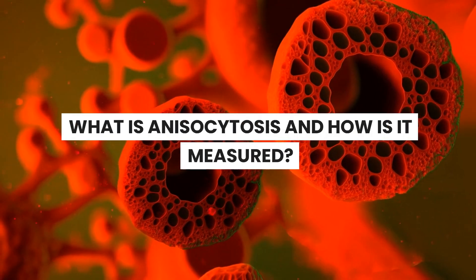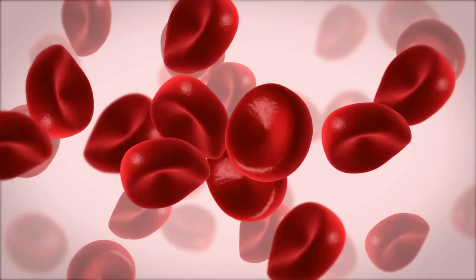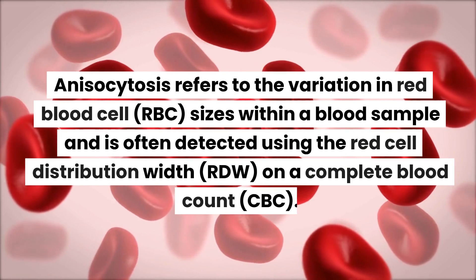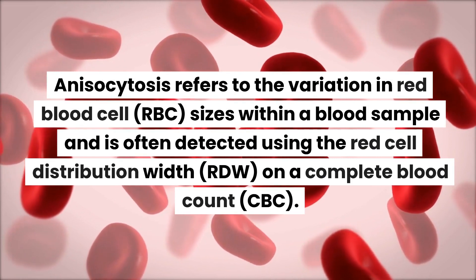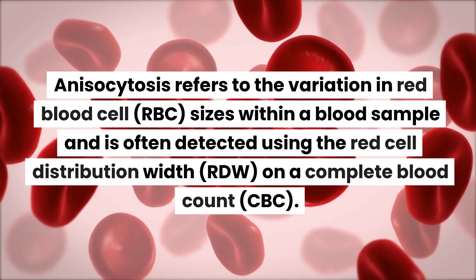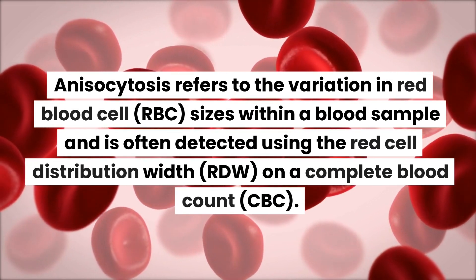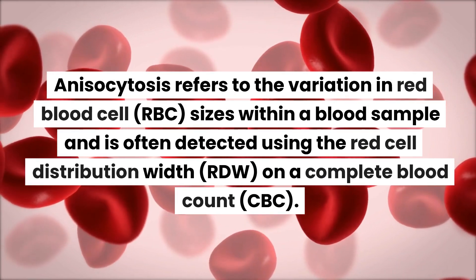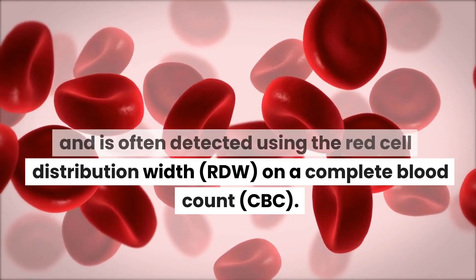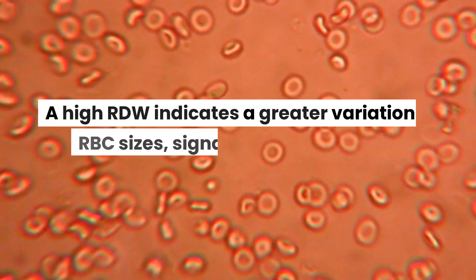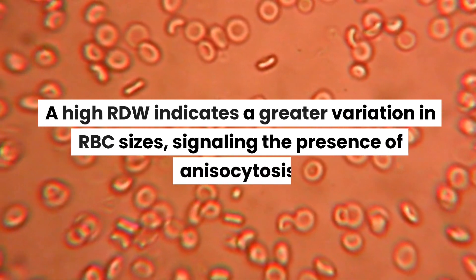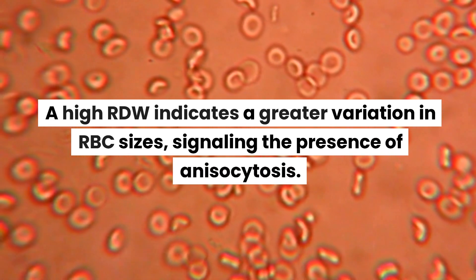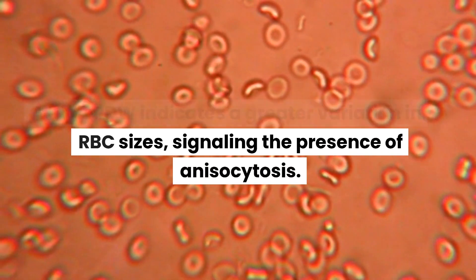What is anisocytosis and how is it measured? Anisocytosis refers to the variation in red blood cell (RBC) sizes within a blood sample and is often detected using the red cell distribution width (RDW) on a complete blood count (CBC). A high RDW indicates a greater variation in RBC sizes, signaling the presence of anisocytosis.